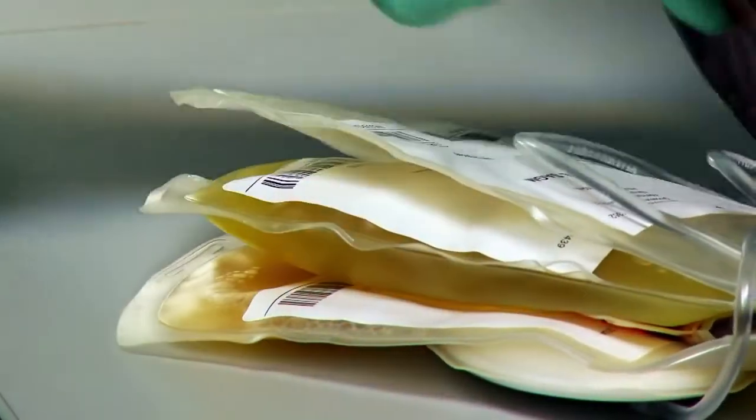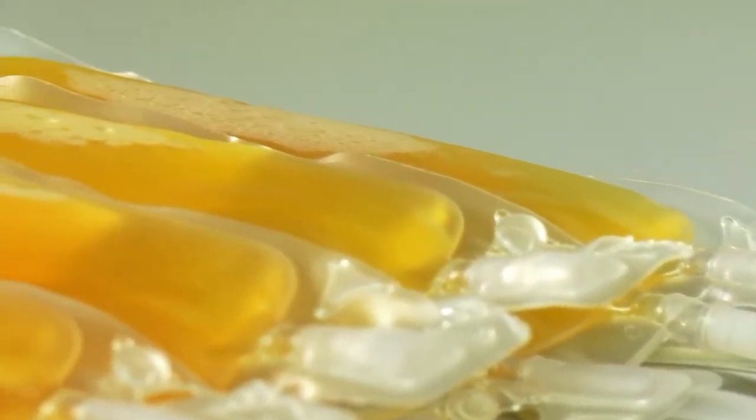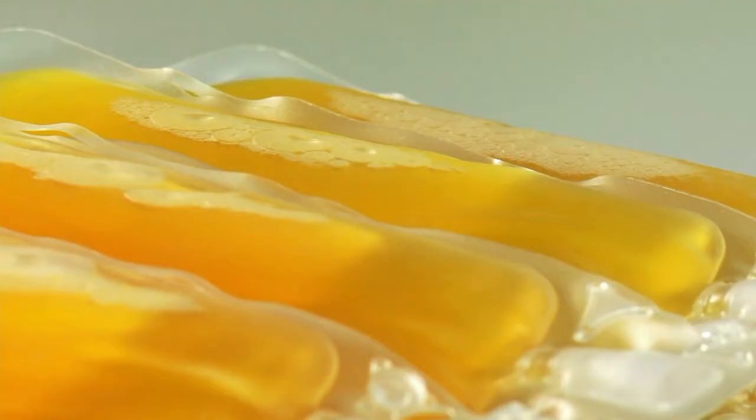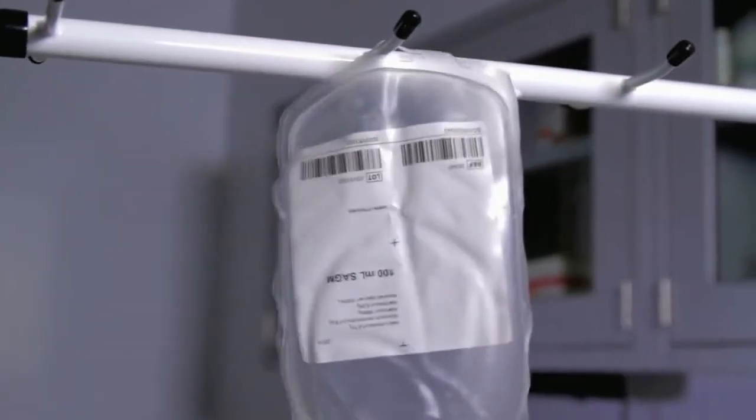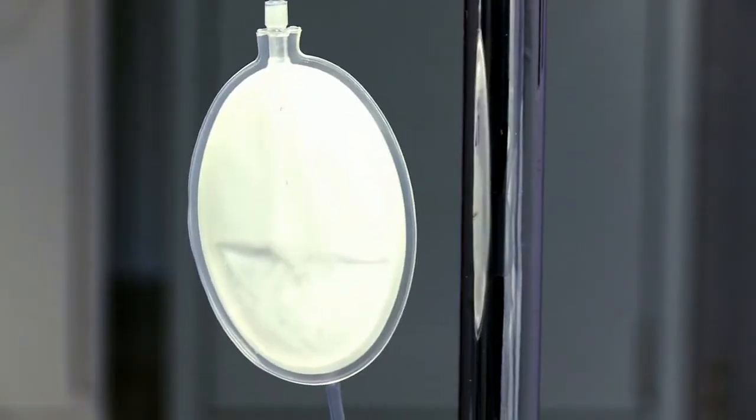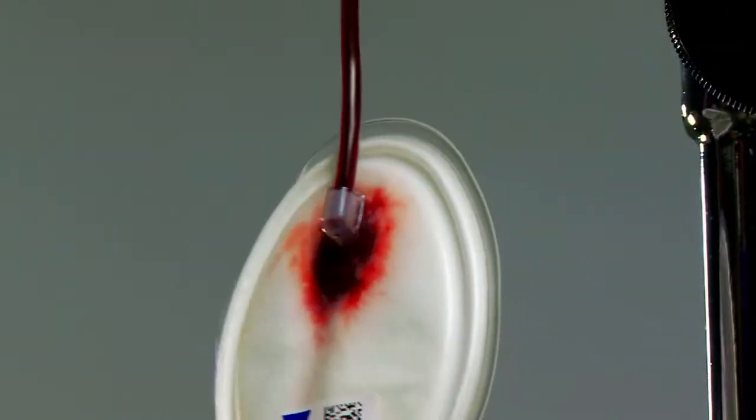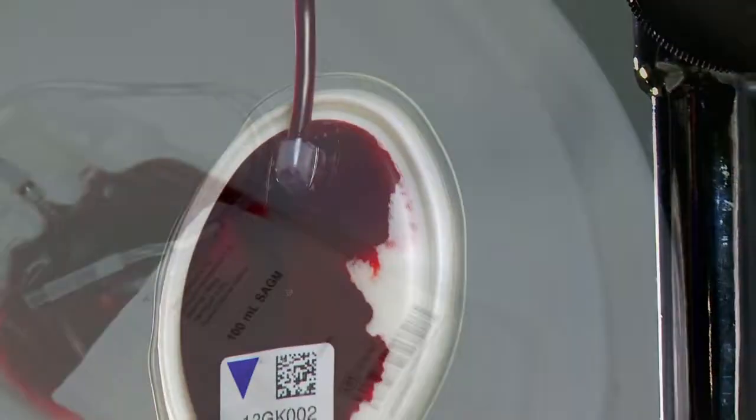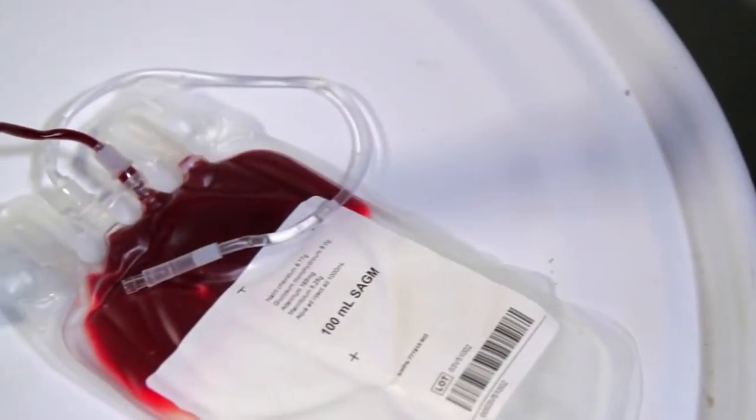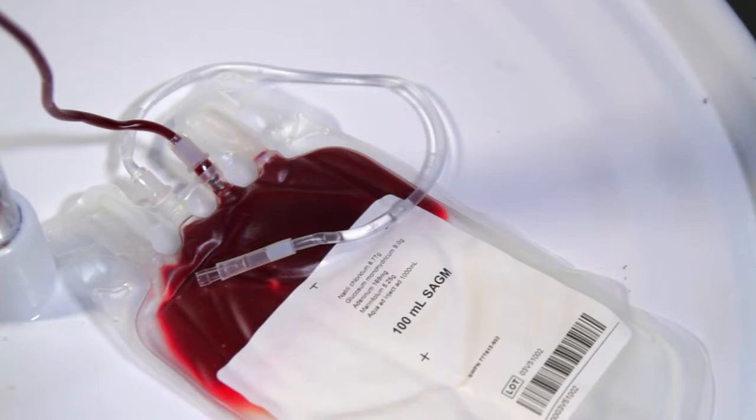The operator now begins the final steps of processing. The plasma units emerge from the device sealed, fully leuko-reduced and ready for storage. SAG-M is drained through the integrated leuko-reduction filter. The red blood cells and SAG-M are mixed and then leuko-reduced. The result is a consistent, fully leuko-reduced product with a high recovery of red cells.